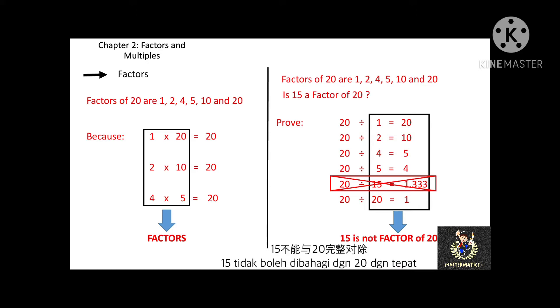You will notice, when you divide 20 with all the factors, you will get a round number except 15. 20 divided by 15 equal to 1.33. Since it is not a round number, therefore, 15 is not a factor of 20.